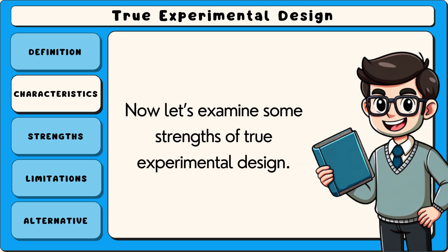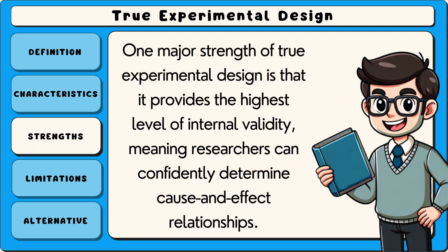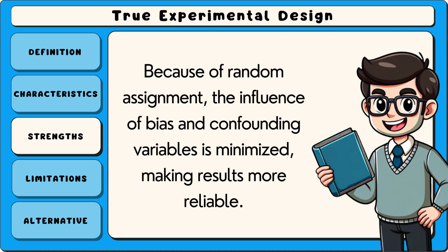Now let's examine some strengths of true experimental design. One major strength is that it provides the highest level of internal validity, meaning researchers can confidently determine cause and effect relationships. Because of random assignment, the influence of bias and confounding variables is minimised, making results more reliable.